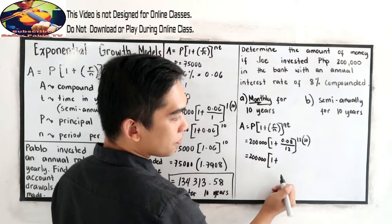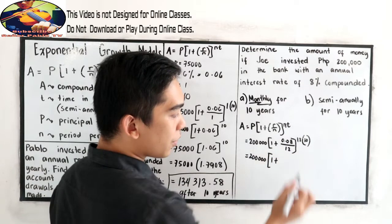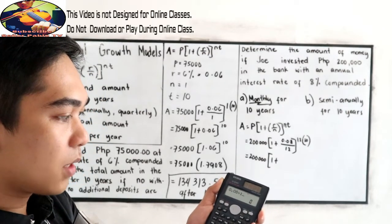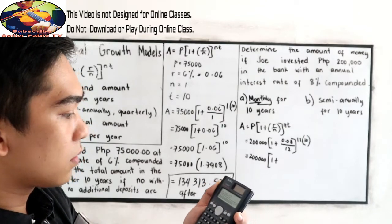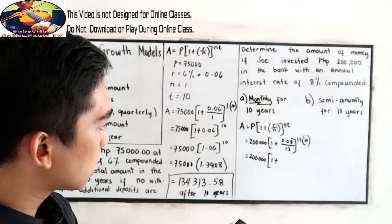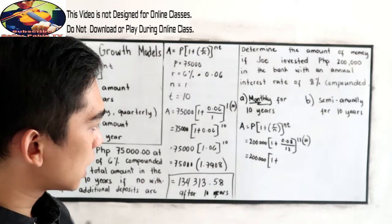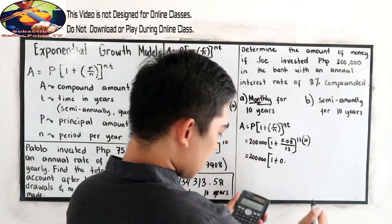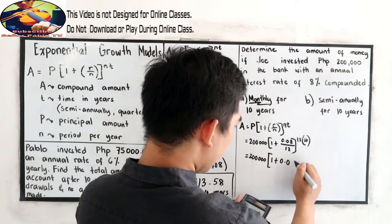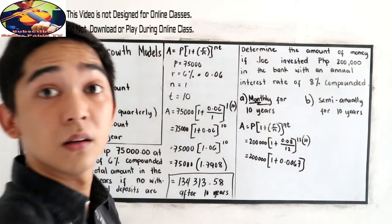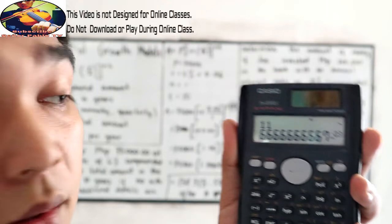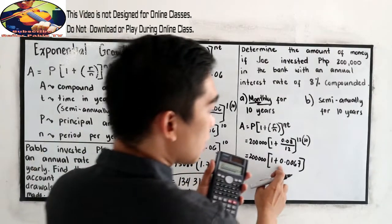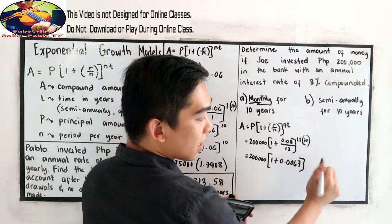200,000, 1 plus 0.08 divided by 12. 0.08 divided by 12, this is 0.0067. You can check your calculator. So this is raised to negative 3. We need to move 3 times on the left. That's why we have 0.0067. Then, 12 times 10, that is 120.